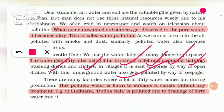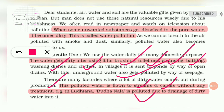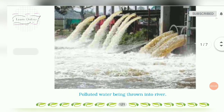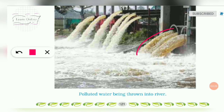Factories are also generating a lot of dirty water during production, and they are dumping that dirty water directly into water resources. This polluted water flows into rivers through drains without any treatment. For example, the Budha Nala in Ludhiana is polluted because dirty water is constantly discharged into it.